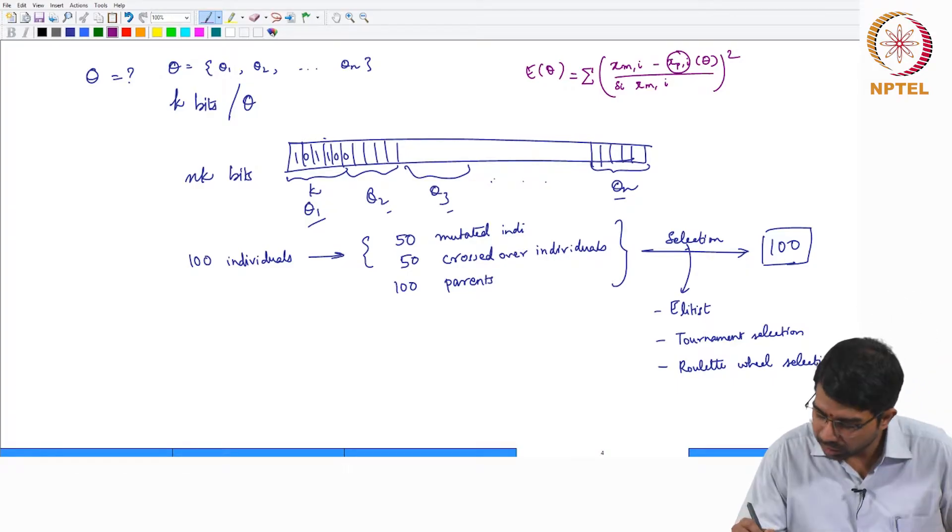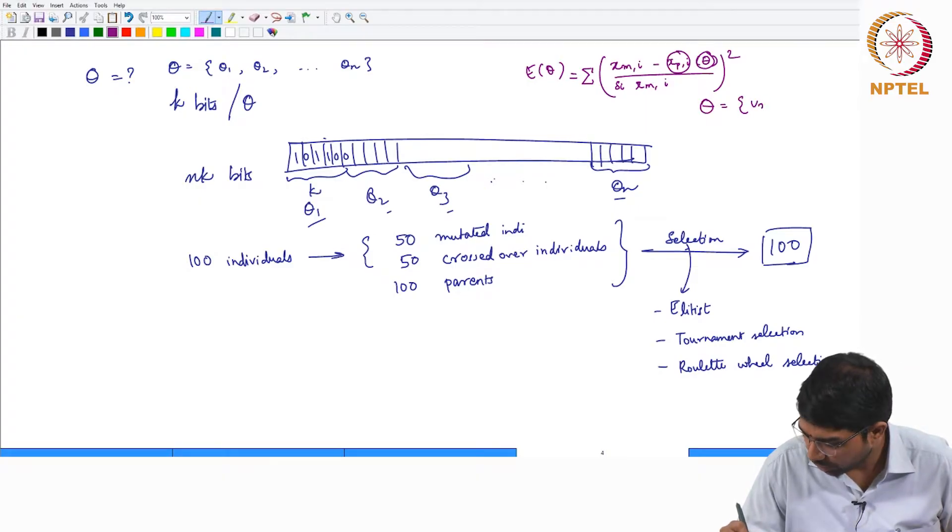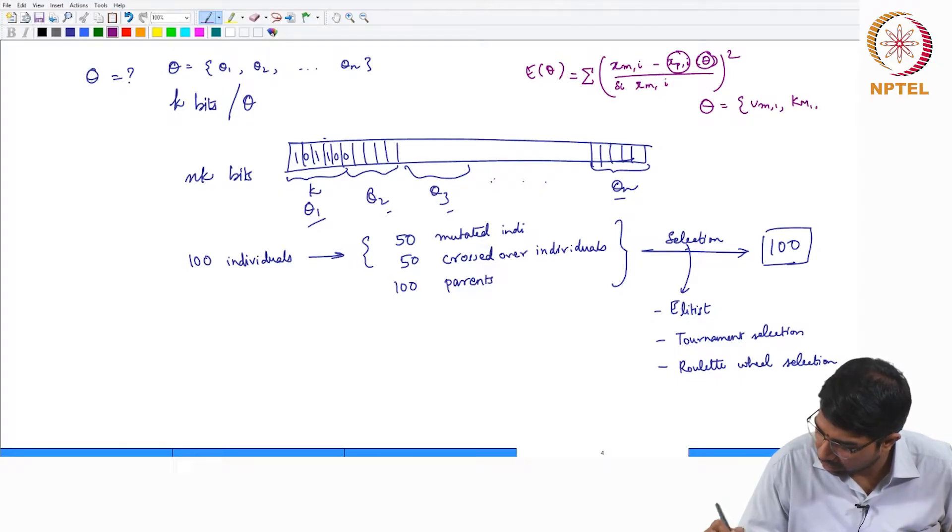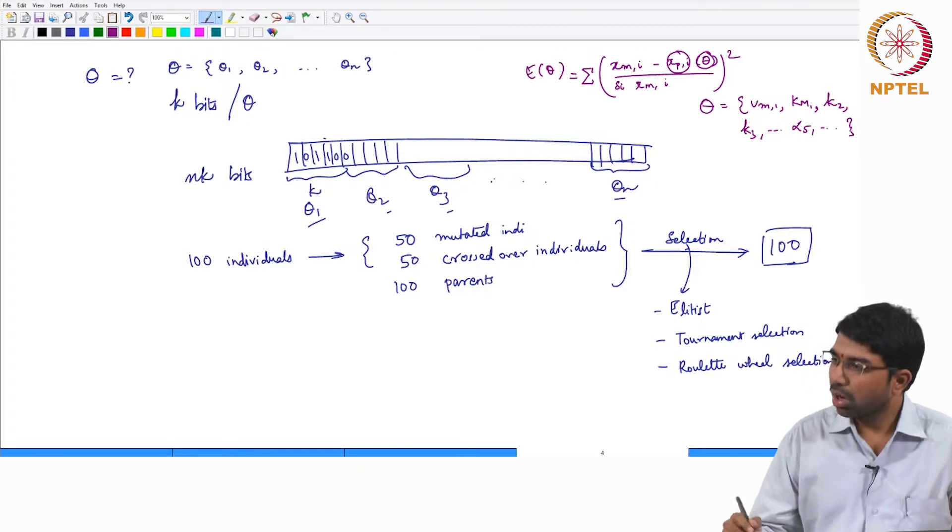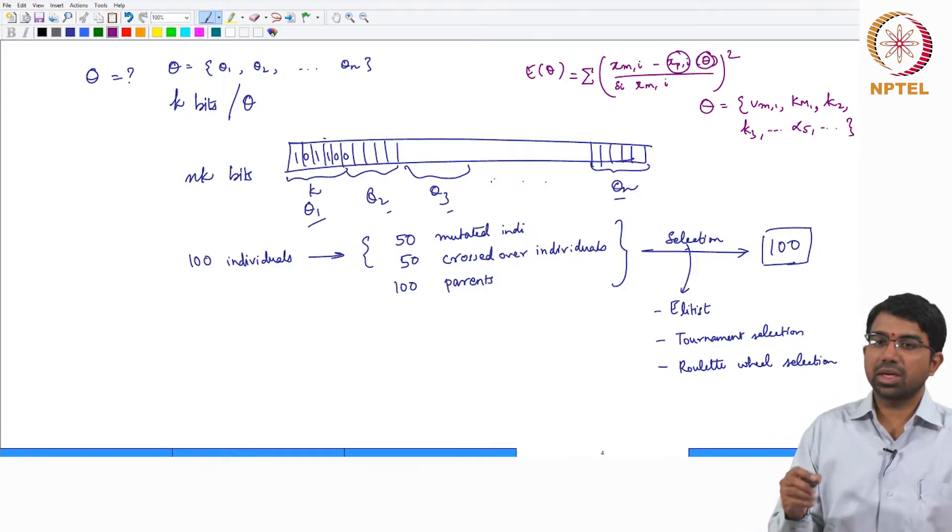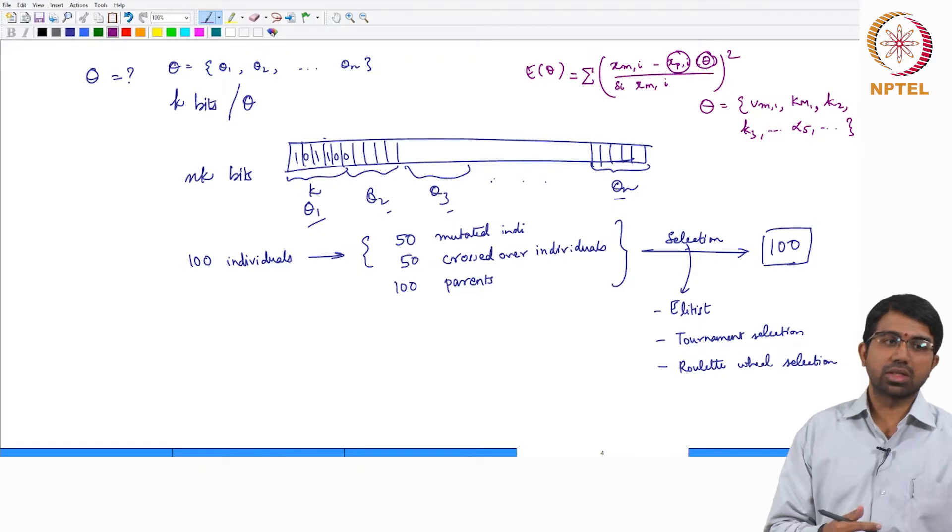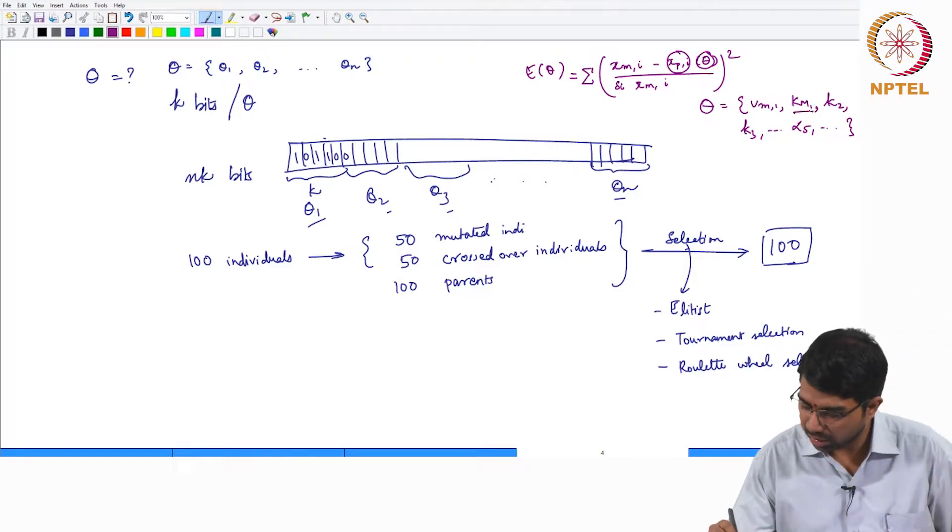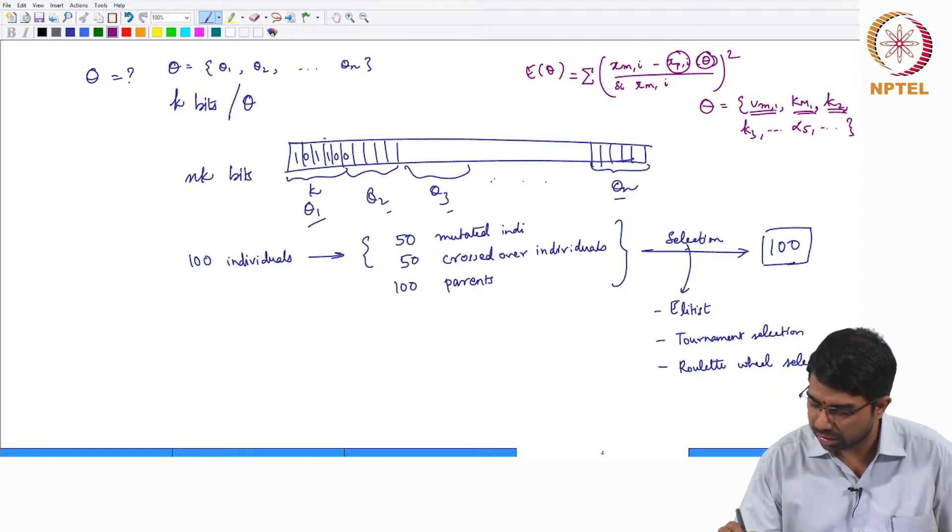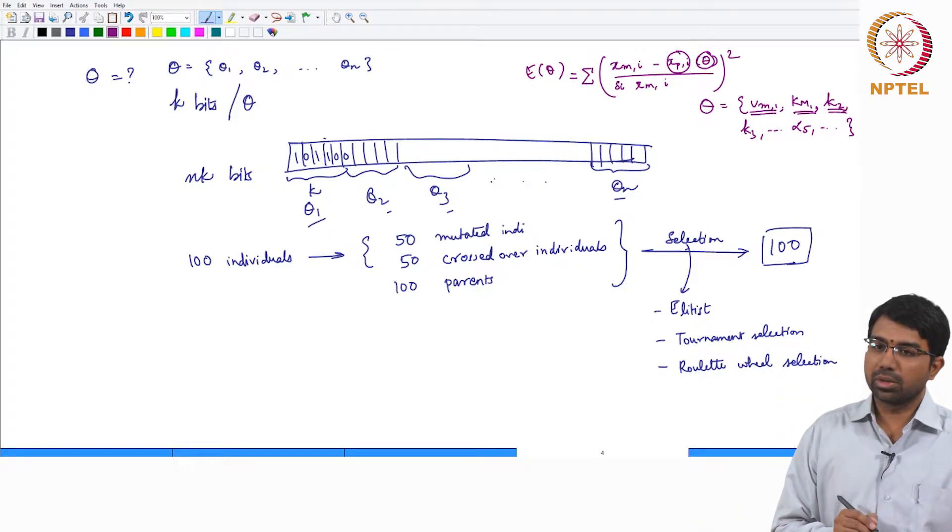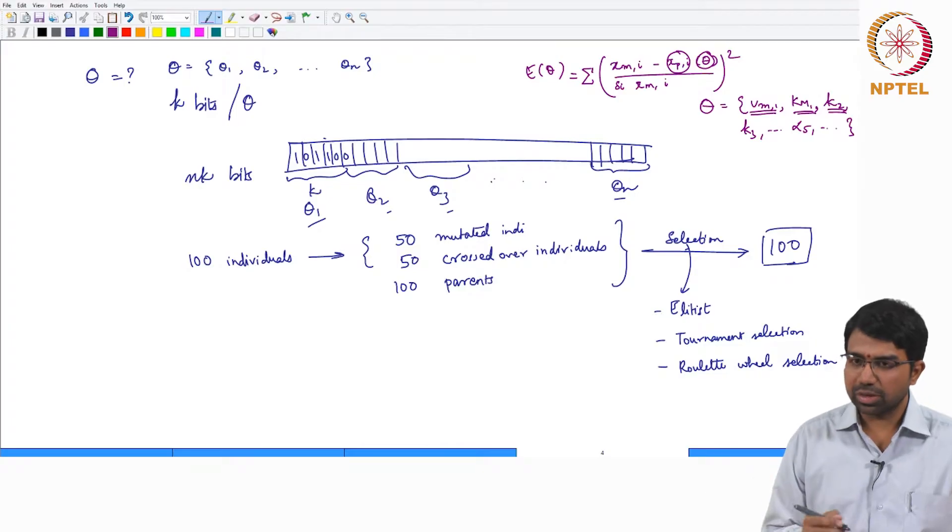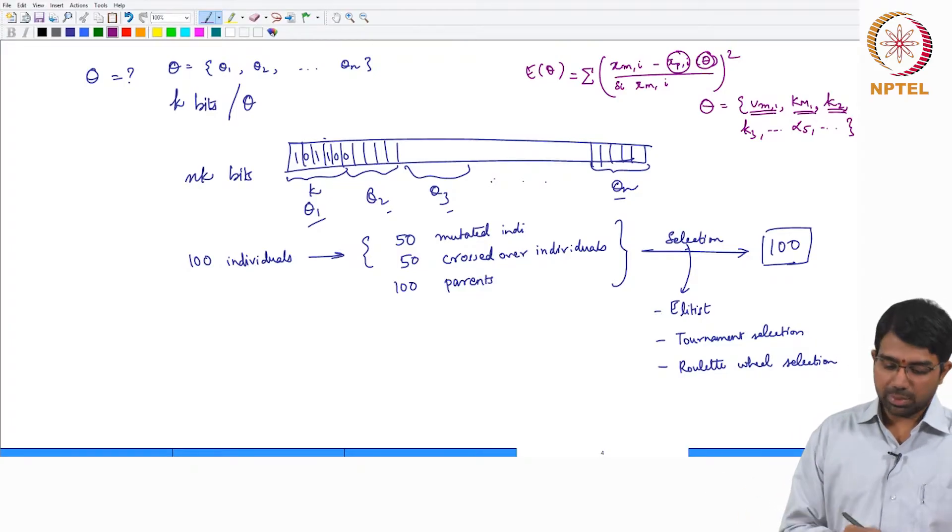You need to find out this theta. What is theta? It is nothing but Vm1, Km1, then could be some K2, K3, alpha5, whatever - all the parameters that describe your mathematical model, your biological system. It could be a particular binding affinity, a rate constant, an enzyme turnover number, maximum rate of reaction - all of these are your parameters.